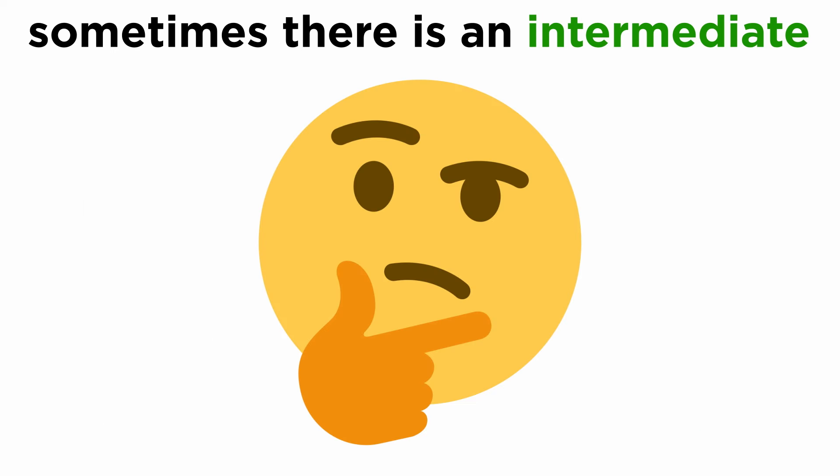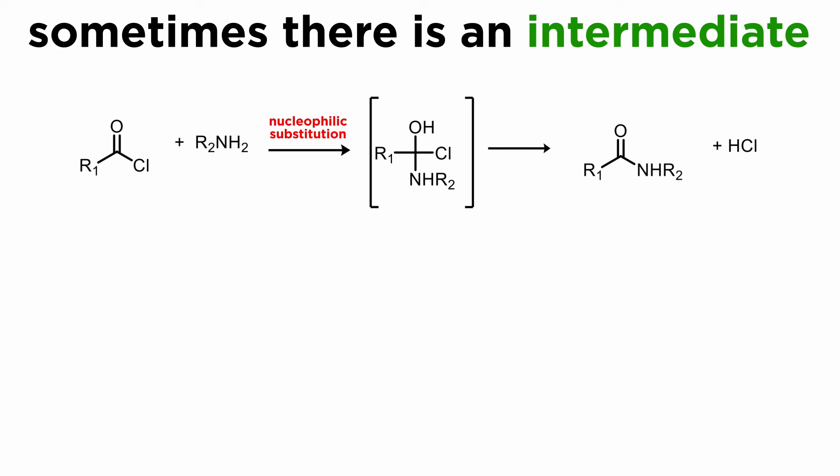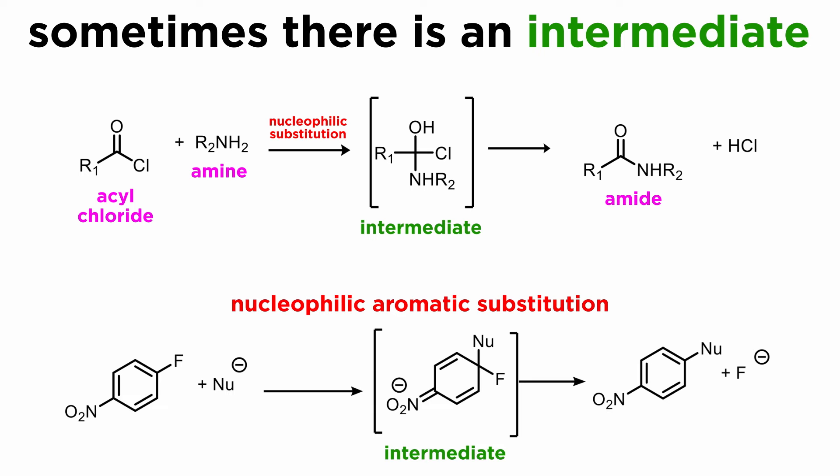In many cases, an intermediate is involved, meaning that the nucleophile and electrophile react but do not give the product in a single step. An example would be nucleophilic substitution at an acyl carbon, more specifically the synthesis of an amide from an acyl chloride. In this reaction, there is a tetrahedral intermediate that exists for some discrete time period before the product is formed. Another example is nucleophilic aromatic substitution, in which a nucleophile attacks the ring at the position occupied by the leaving group, which is then removed in the second step.